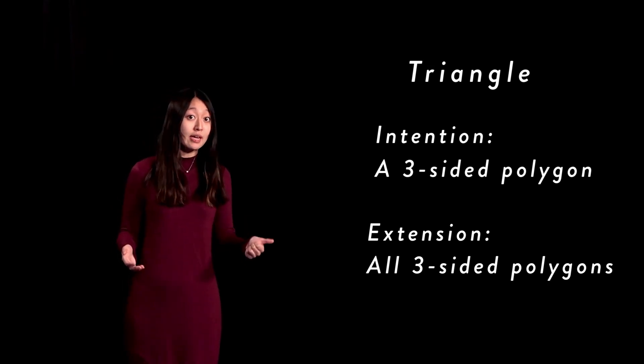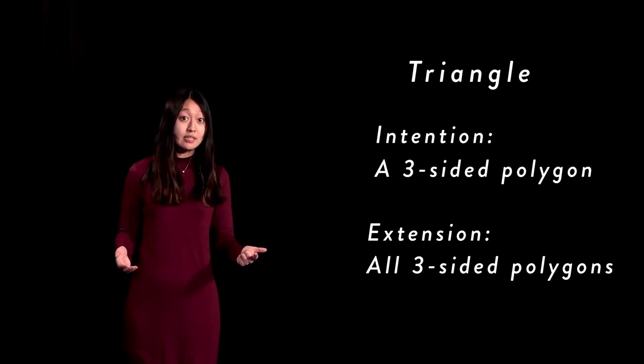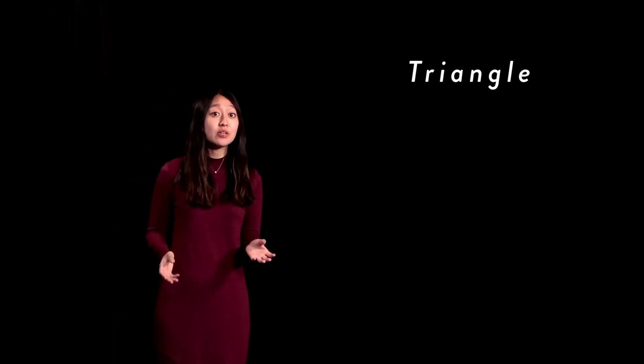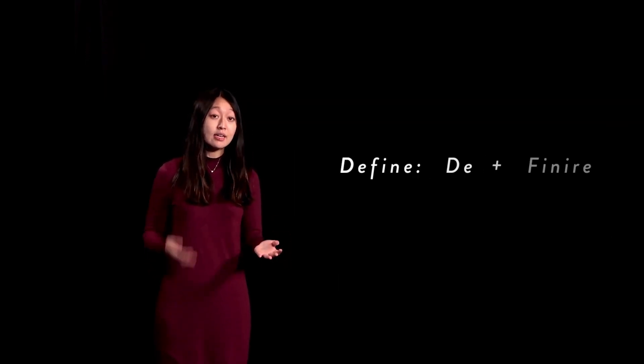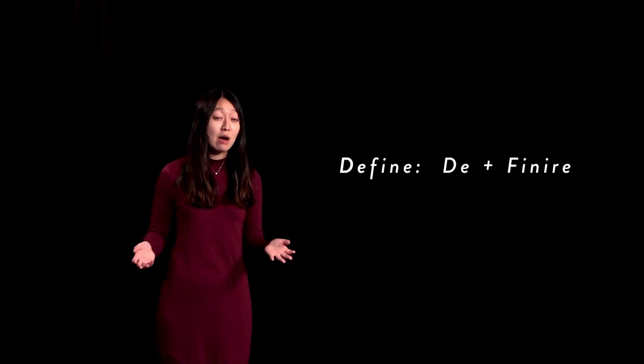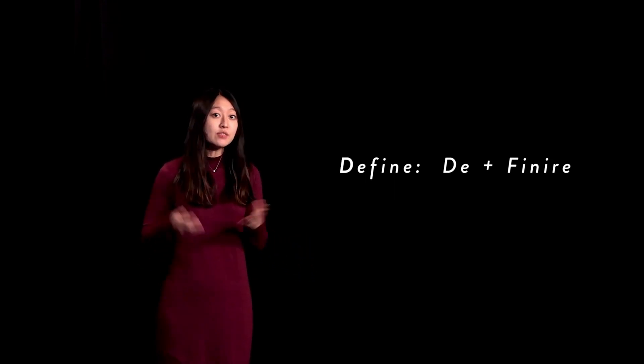If there is something that is both three-sided and a polygon, then it is in the extension of triangle. In other words, such a thing is a member of the category triangle since it has both of the common properties that define such a category. It is important to note that define comes from the Latin de infinere, or to bound or limit completely. So what defines the limit of a category? The definition slash intension of the term that refers to it. And what things are in such a category? Only those things that have the common property or properties that a term's intension defines of them.